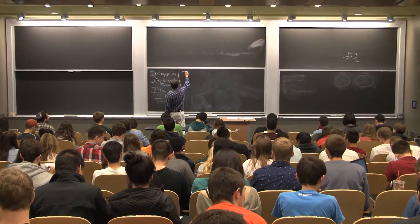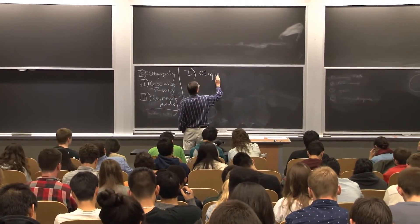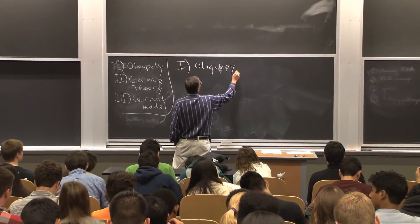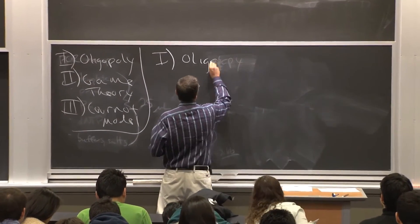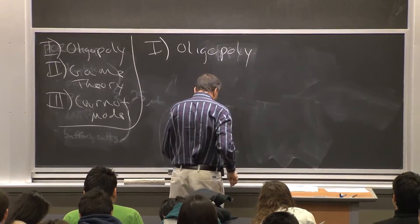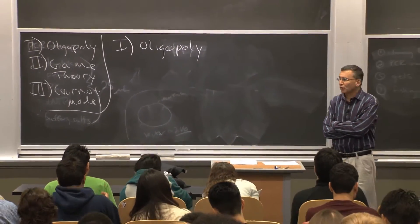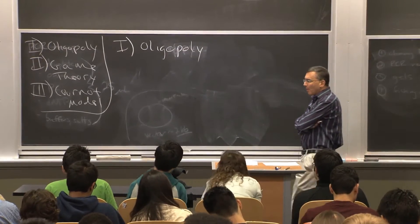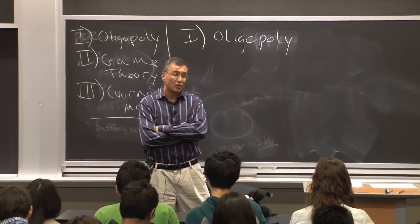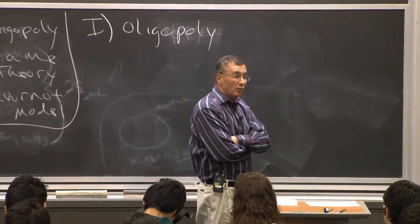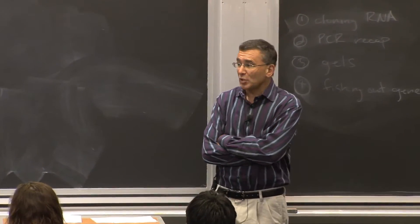What we've done so far in this section of the course is talk about two extremes in terms of market structure. Remember, we need market structure to pin down the firm's production decision. We talked about one extreme, which was perfect competition, and another extreme, which is monopoly.